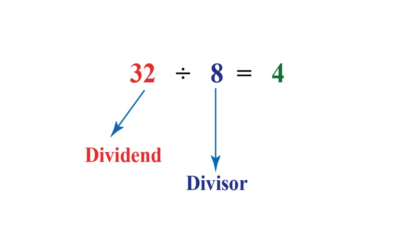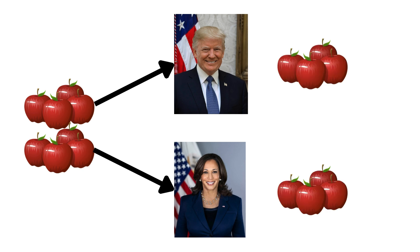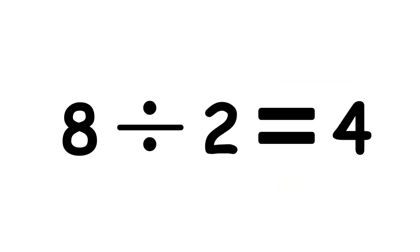The result is called a quotient or ratio. If you have eight apples, and you want to give them equally to two friends, then each friend gets four apples. Eight divided by two is four.